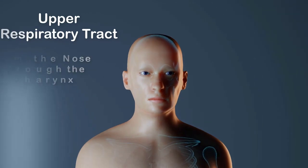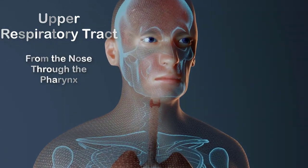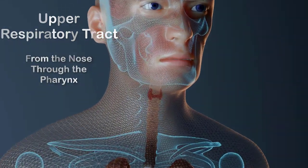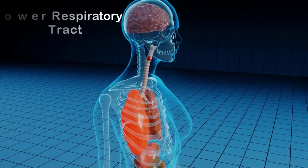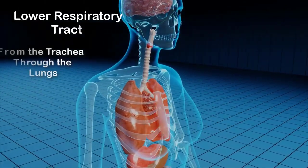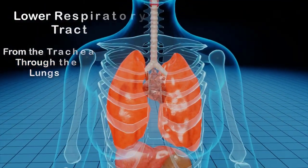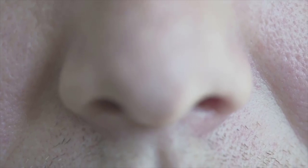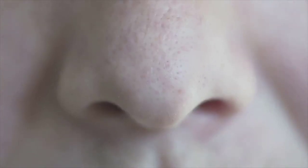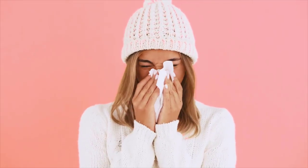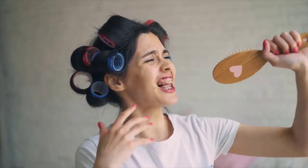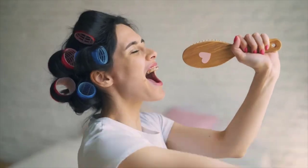The airway from the nose through the pharynx is often called the upper respiratory tract. The regions from the trachea through the lungs compose the lower respiratory tract. The nose has several functions: it warms, cleanses, and humidifies inhaled air. It detects odors, and it serves as a resonating chamber that amplifies the voice.